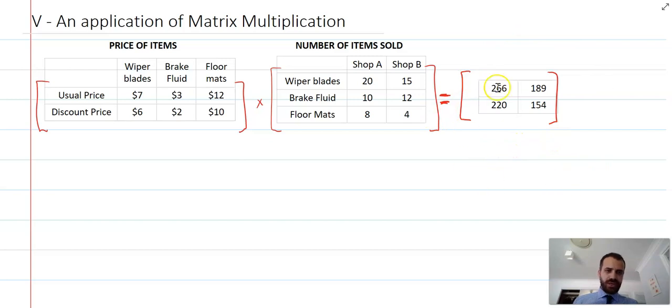Now what does that third matrix represent? Let's take a look at what these matrices are. This is a 2 by 3 matrix and this is a 3 by 2 matrix.